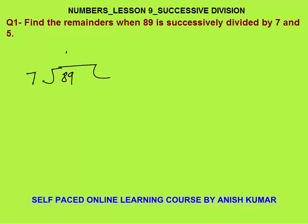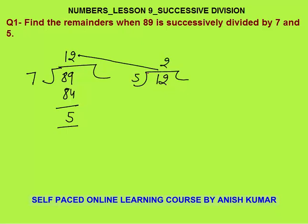7 times 12 is 84, so the remainder is 5. Now when I say successive division, this quotient 12 becomes the number for the second division. The second divisor is 5. 5 times 2 is 10, so the remainder is 2. My remainders are 5 and 2 when 89 is successively divided by 7 and 5.